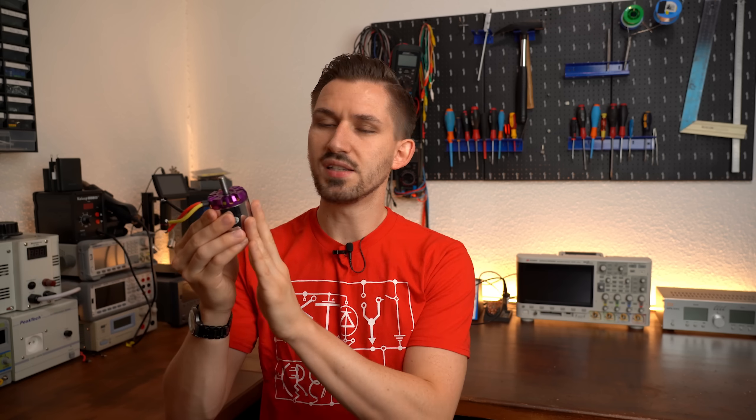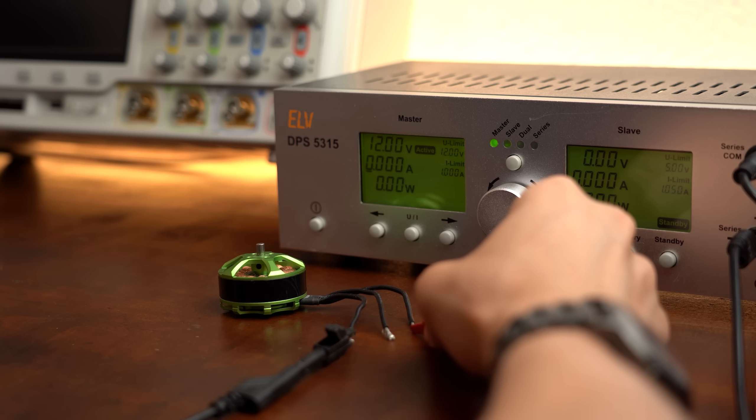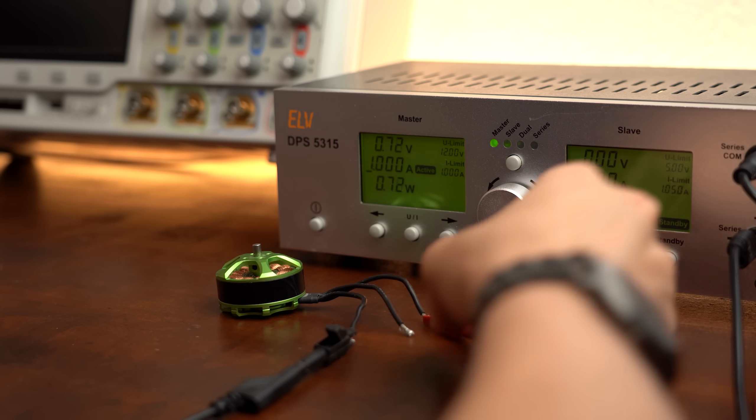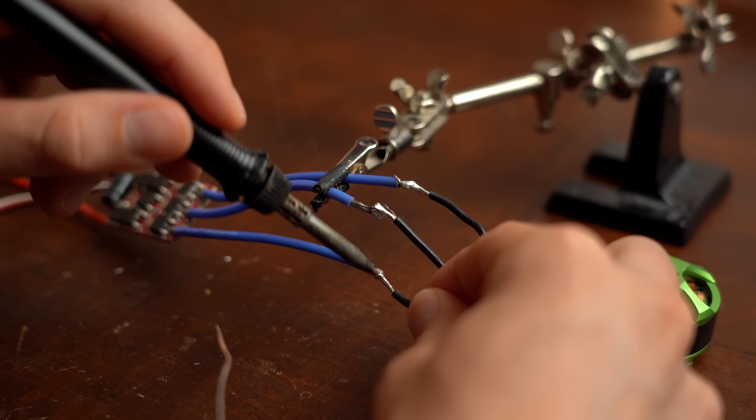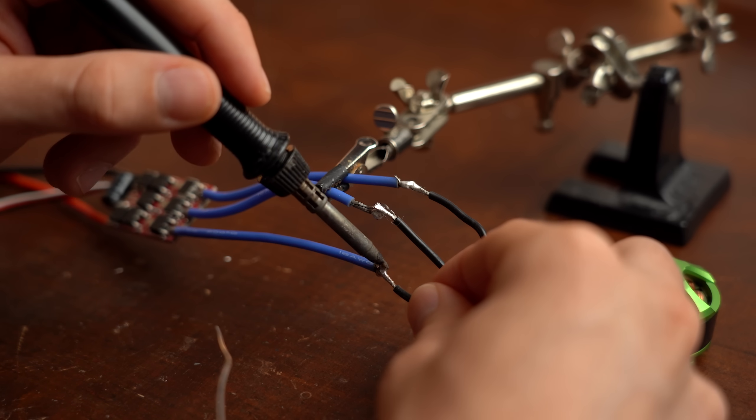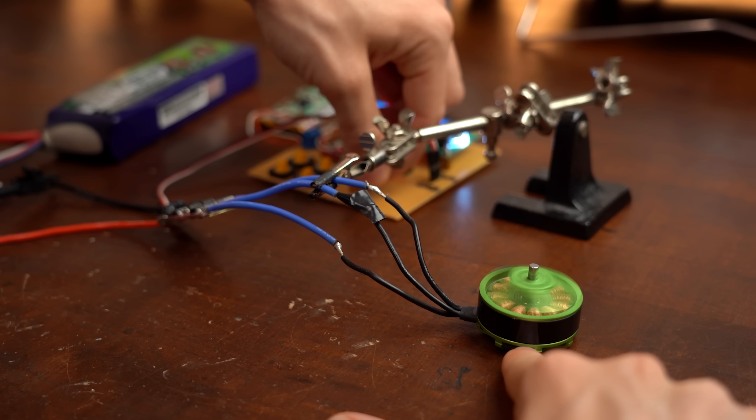Basically, BLDC motors are widely used nowadays and the only real disadvantage is that they cannot be powered directly with direct current like from a battery. Instead, we need to put the ESC in between motor and battery whose job it is to connect the motor wires to the battery voltage in a specific order so that the motor can spin.